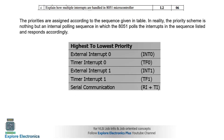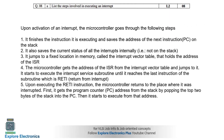The next question lists the steps involved in executing an interrupt once it is activated. When the microcontroller is executing instructions in the main code, the program counter holds the address of the next instruction. That next instruction address must be carefully saved into the stack as the first step.